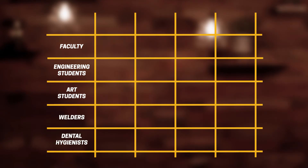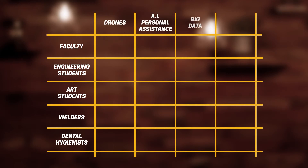So we've got five groups on the left. On the top, let's put some current and upcoming technologies — how about drones, AI personal assistants, big data, and augmented reality.